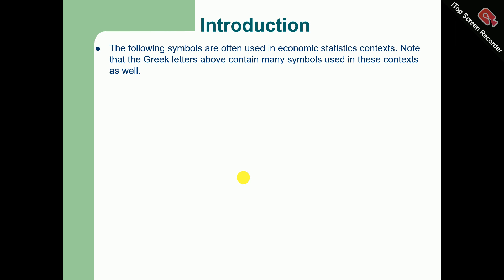The following symbols are used in economic statistics context, but note that the Greek letters we discussed earlier contain many symbols used in these contexts as well. For example, this vertical line means 'given that' in statistics. If you say X given Y equals 2, it means X given the fact that Y equals 2. This is how we use this statistical symbol in this context.